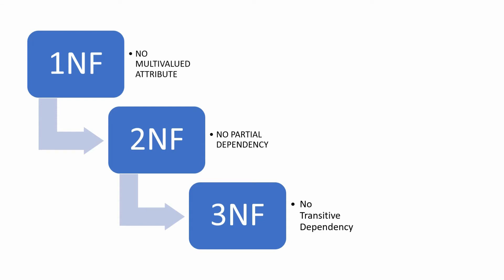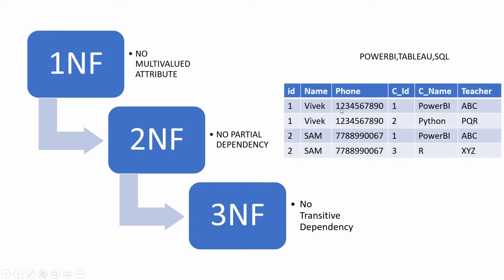Hi guys, this is the fourth video of the video series on normalization. In the first video, we understood what normalization is. The second video on first normal form demonstrated the removal of multi-valued attributes. And in the second normal form, we discussed that there should not be any partial dependency of non-prime attributes on a portion of the primary key. If you have not watched these videos, I will drop a link to them in the description and I advise that you watch them as well.